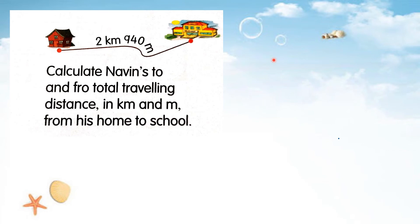Let's look at this problem. Calculate Nawin's to and fro total traveling distance in km and m from his home to school. This is Nawin's house, so he goes to school. The distance is 2 km 940 meter. Now we need to calculate the total distance to and fro.